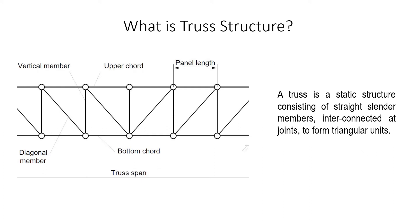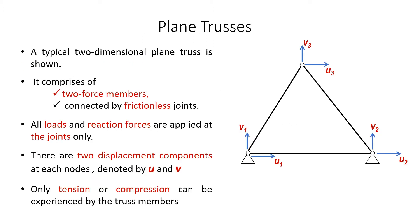What is a truss structure? A truss is a static structure consisting of straight slender members interconnected at joints to form triangular units. In general, the characteristics of a plane truss are that it is comprised of two-force members, it is connected by frictionless joints, and all loads and reaction forces are applied at the joints only, as shown in this figure.